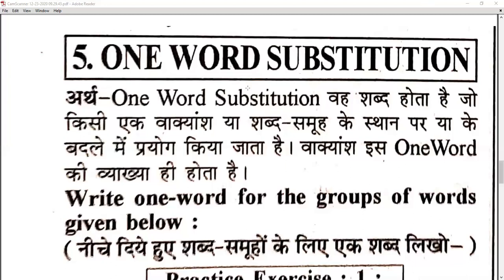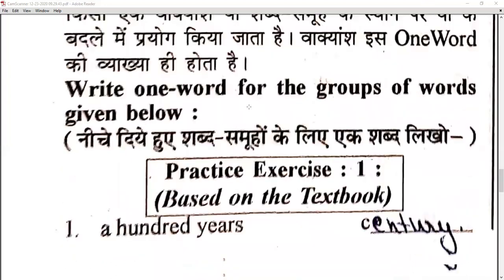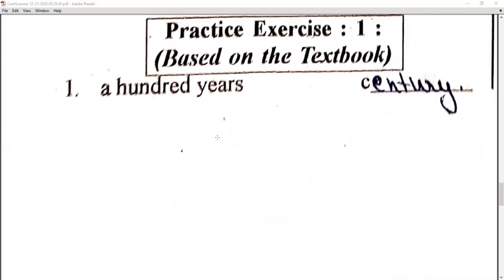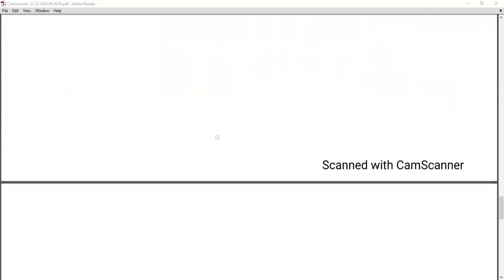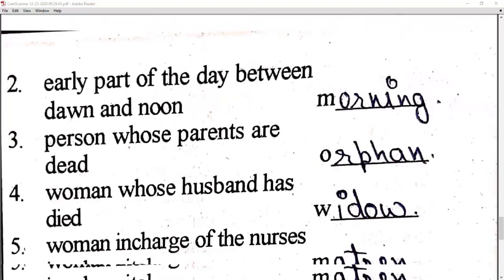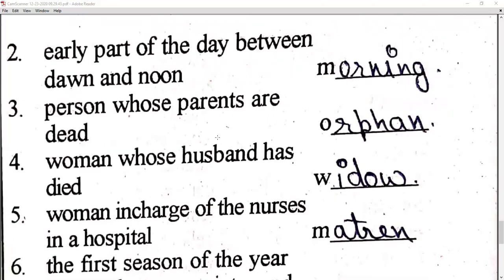So you have to understand better with a few examples. See, 'a hundred years' — the period of hundred years, if you write 'a hundred years', you can simply say 'a century'. So hundred years equals one century.